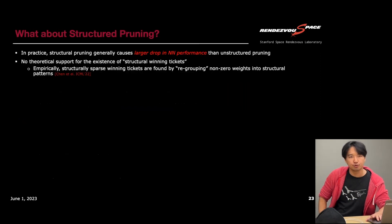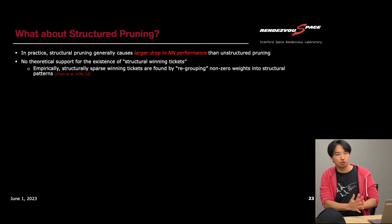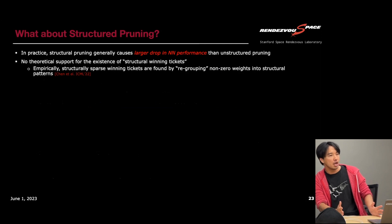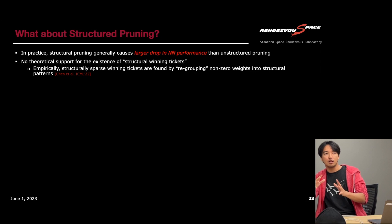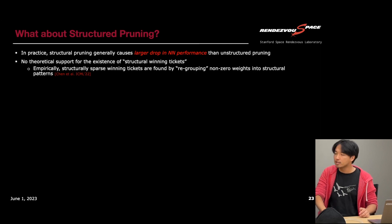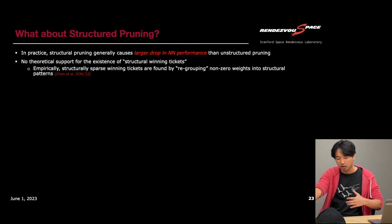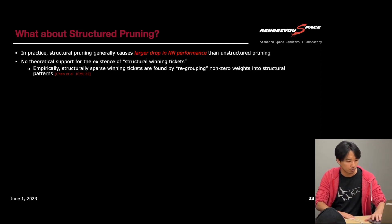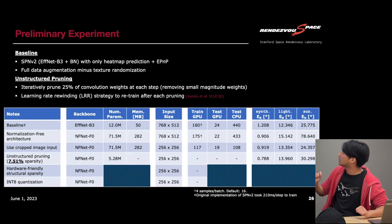Structured pruning has mostly been shown to cause a larger drop in neural network performance when pruned to the same level of sparsity as unstructured pruning. There isn't solid theoretical support for whether winning tickets with structural sparsity at filter or channel level exist, but there has been some work trying to identify this. If those structurally sparse winning tickets exist, that would be very good news for us because we can use them to actually decrease the memory footprint of the neural network.